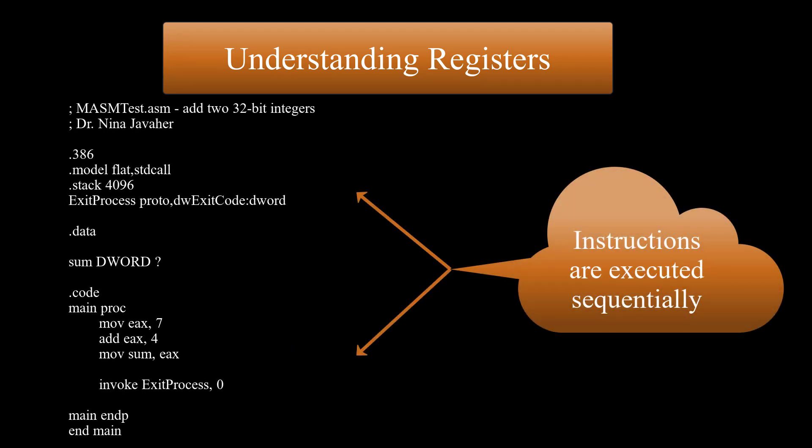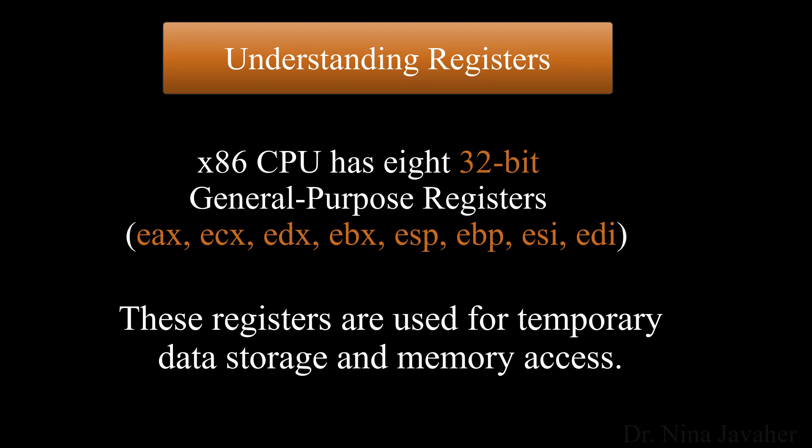When running a program, our CPU executes a list of instructions sequentially, one by one, in the order listed in the source code. An X86 CPU has these eight 32-bit general-purpose registers. Each register can hold a 32-bit integer value.